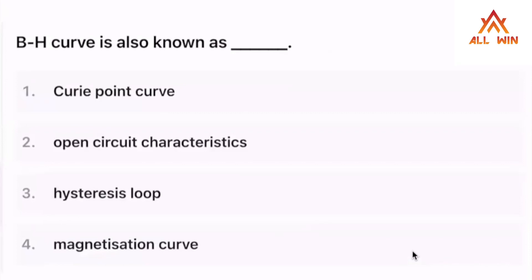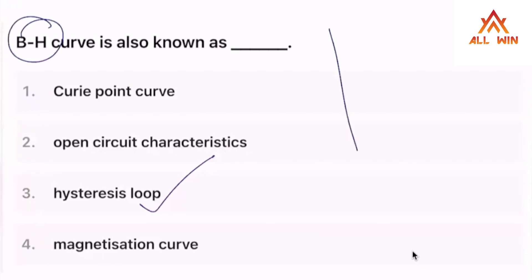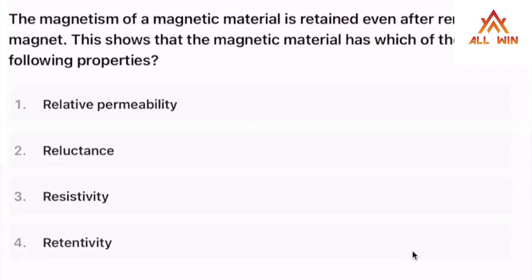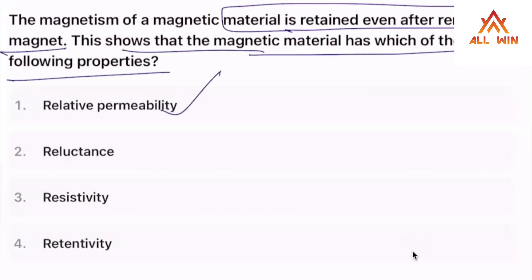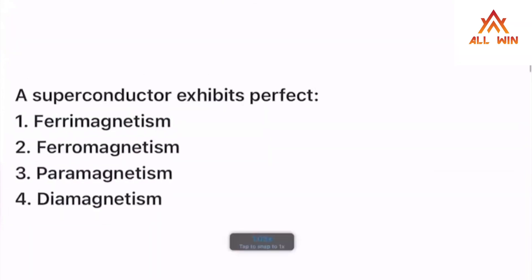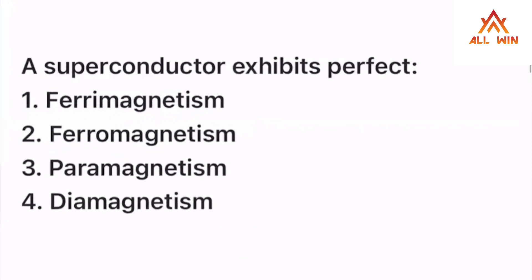This gap is also known as... The magnetism of a magnetic material is retained. This shows the property — which of the following properties: Relative permeability, Retentivity? Option 4: Retentivity. Retentivity is the correct answer.